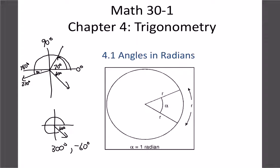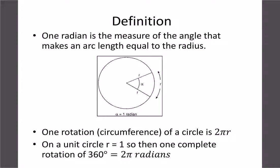Radians work the same way but with a different unit — instead of degrees we deal with whole numbers or fractions. A radian is basically measuring the angle as a comparison to the radius of a circle. One radian is defined as the distance around a circle equal to the radius of that circle, so if the radius and the arc distance are the same, that's one radian.